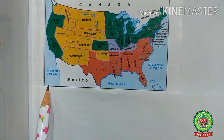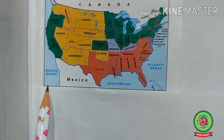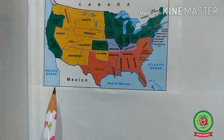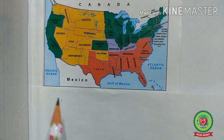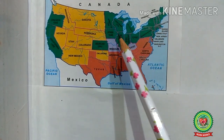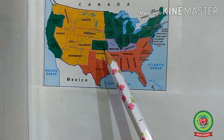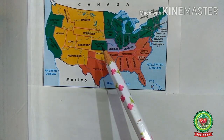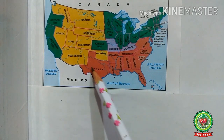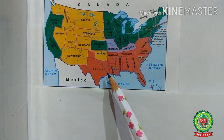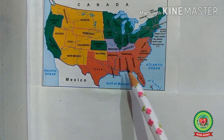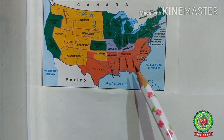Now have a look at this map — this was the map of the United States of America during the American Civil War. The states shown in green were the Northern states, and these were the free states, meaning slavery did not exist there. The states shown in orange were the Southern states, and these were the slave states, meaning slavery existed there.